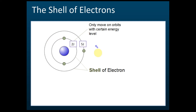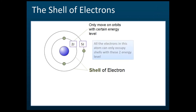When electrons move around these atoms, they can only move with two joules or five joules of energy. They cannot move with any other energy value, so all electrons in this atom can only occupy shells with those two energy levels.